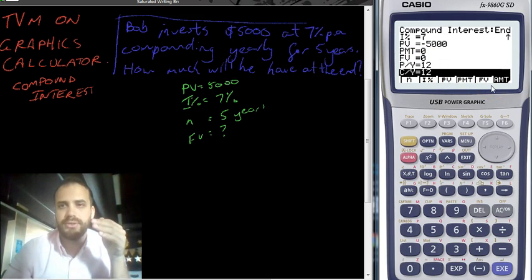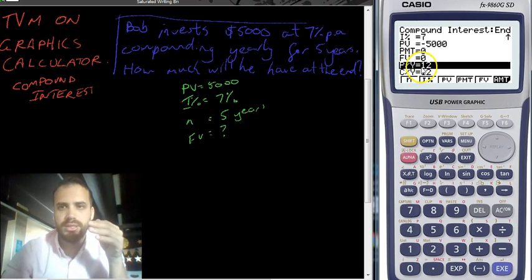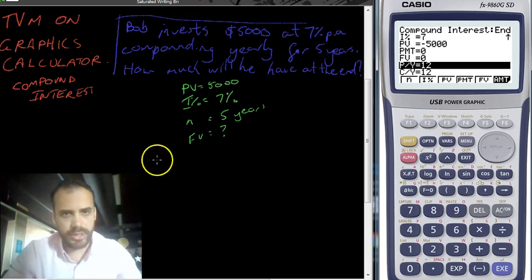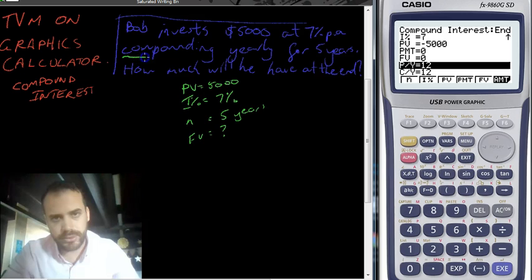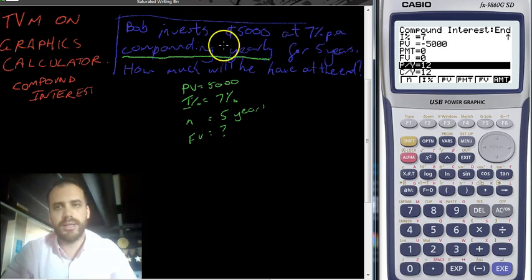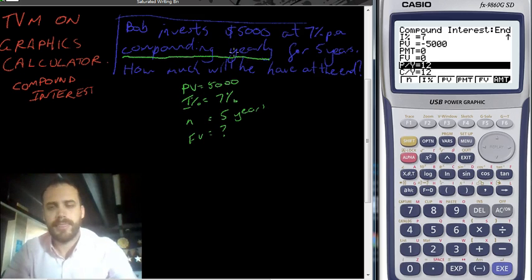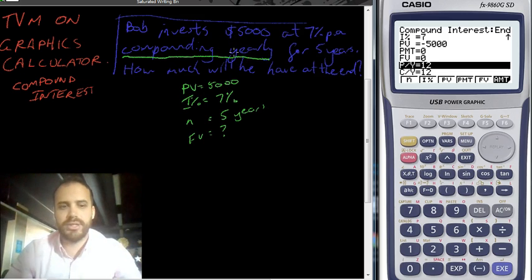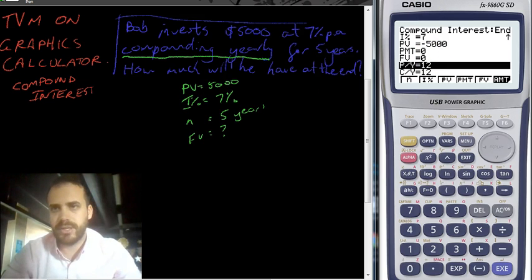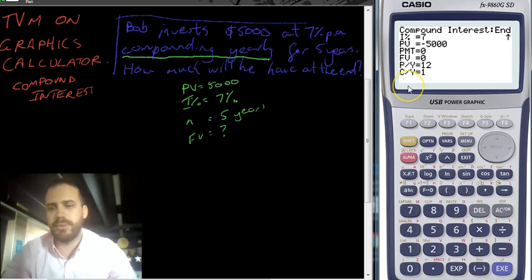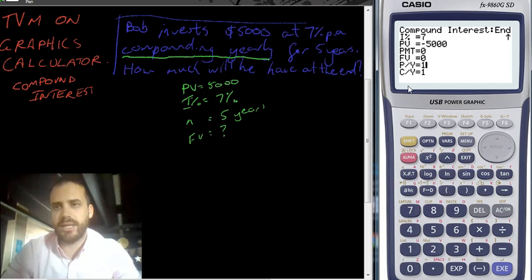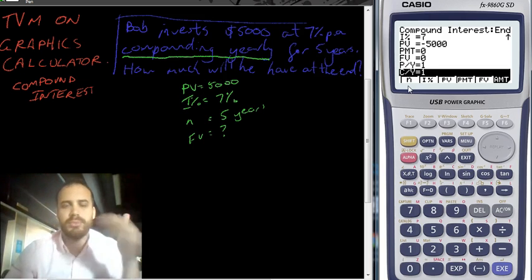Now the last two, you need to be careful here. Now this says payments per year and compounding periods per year. And this is where this word in the question is important: compounding yearly. If it's compounding yearly, it means that there's only going to be one compounding period per year. And just for completeness, I like to put that in as well. So make sure they match up. They might be 1, 1 or 12, 12. Or if it's compounding weekly, it might be 52, 52, whatever it is.